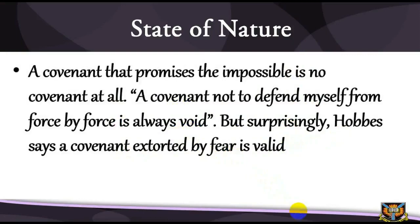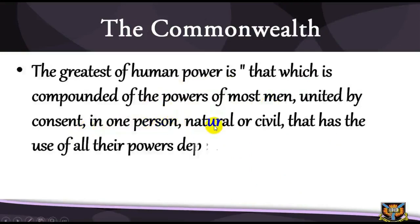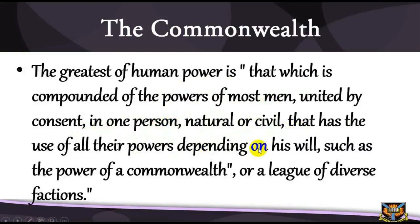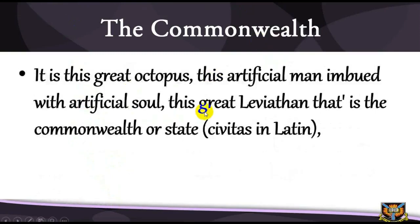On the issue of commonwealth, Hobbes says the greatest of human power is that which is compounded of the powers of most men united by consent in one person, natural or civil, that has the use of all their powers depending on his will — such as the power of the commonwealth or a league of diverse factions. Hobbes defines such a commonwealth as one person of whose acts a great multitude, by mutual covenants one with another, have made themselves every one the author, to the end he may use the strength and means of them all as he shall think expedient for their peace and common defence. It is this great artificial man, imbued with an artificial soul — this great Leviathan, that is the commonwealth of states, or civitas in Latin.